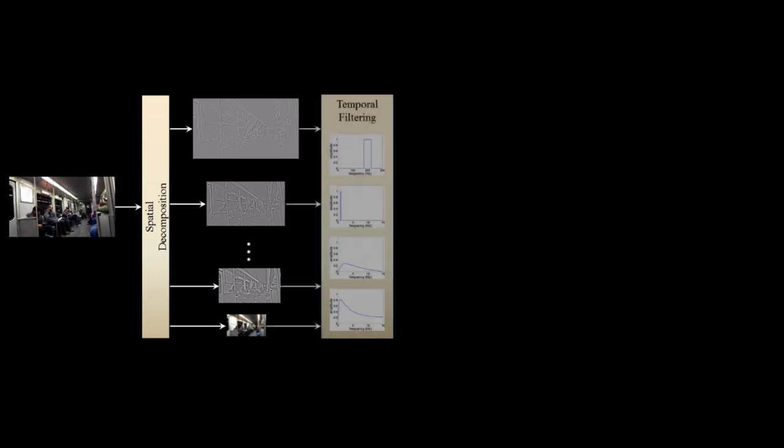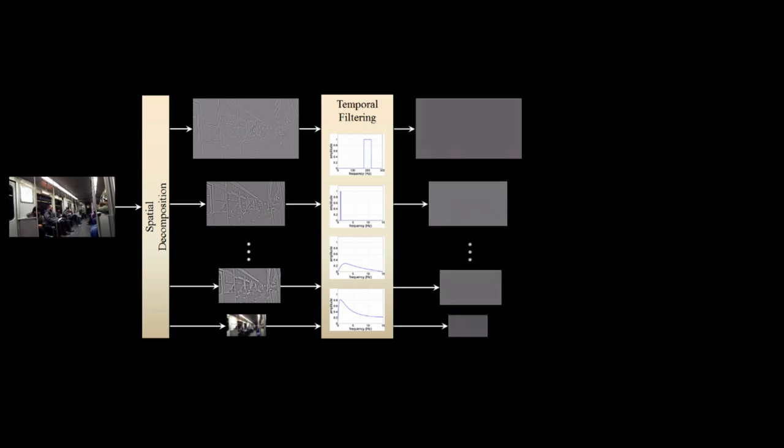Let's have a look at how the method works. We take a regular video as input. We first decompose it into multiple spatial scales using a so-called Laplacian pyramid. This allows us to treat differently large-scale features and small details. The heart of the method is then the temporal processing of the resulting pyramid levels.